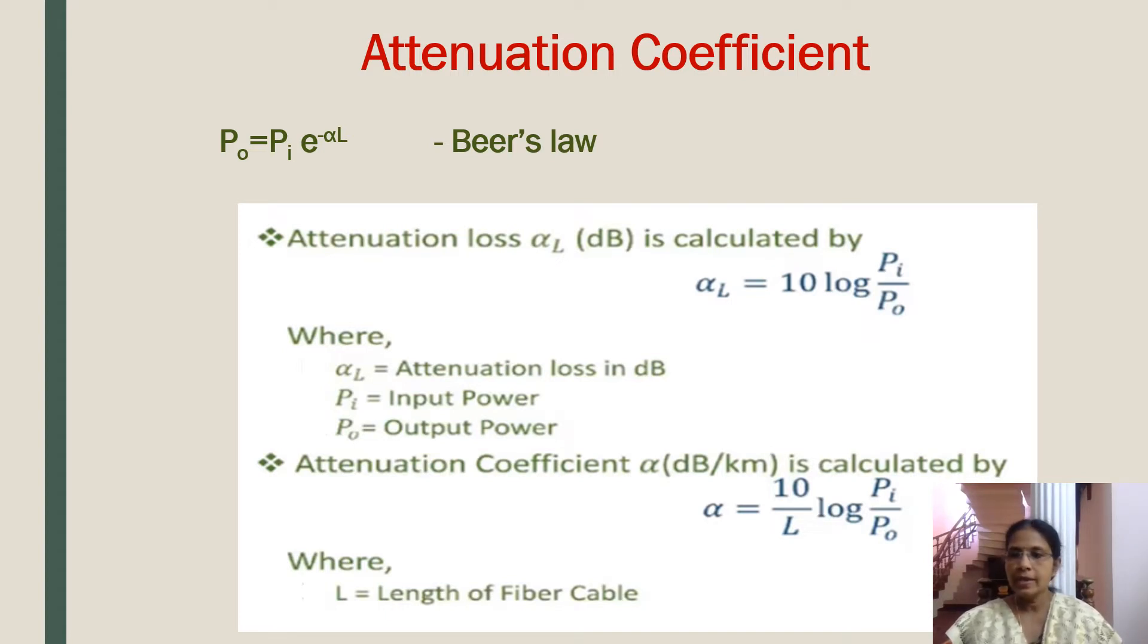In optical fiber transmission, attenuation is often expressed in base 10 form. Therefore, attenuation loss alpha L in dB can be calculated by using equation alpha L equal to 10 log Pi by Po. Here, alpha L is attenuation loss in dB, Pi is input power, and Po is output power.